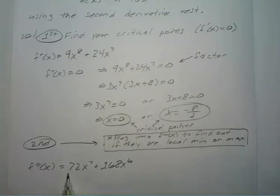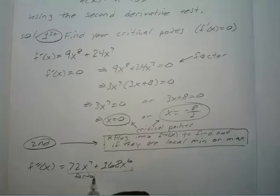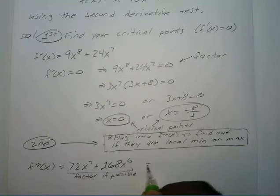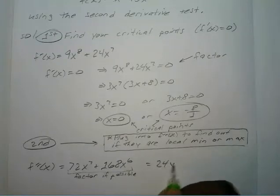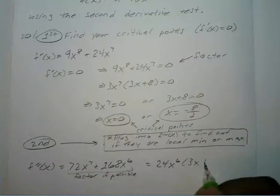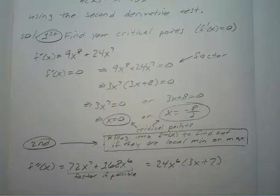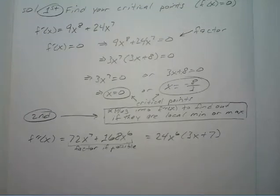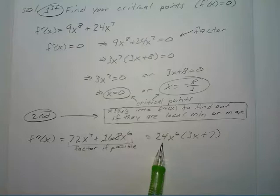So now we have our second derivative. We plug in our 0 and negative 8 over 3. For x equals negative 8 over 3, the second derivative at negative 8 over 3 equals 24 times negative 8 over 3 to the 6th power times 3 times negative 8 over 3 plus 7.